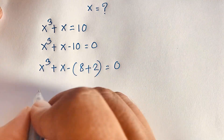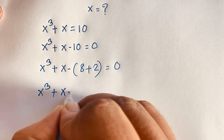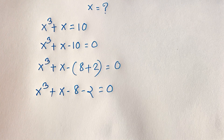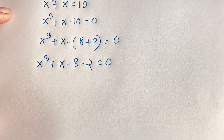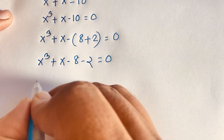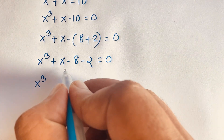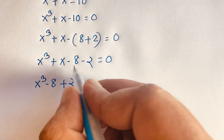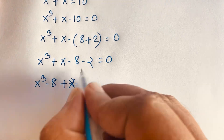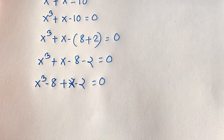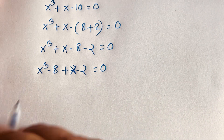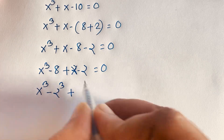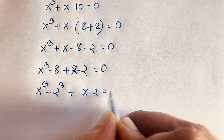Then this equation becomes x to the power 3 plus x minus 8 minus 2 is equal to 0. I'll solve this question step by step. Now I can see easily here is x to the power 3 minus 8, and then plus x minus 2, is equal to 0. Now I can say x to the power 3 minus 8 — since 8 is 2 to the power 3 — plus x minus 2 is equal to 0.